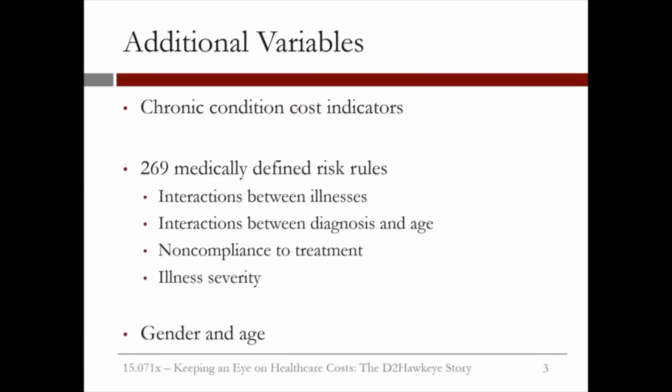In addition to the initial variables — the 217 diagnosis groups, 213 procedure groups, and 189 drug groups — we also defined, in collaboration with medical doctors, 269 medically defined rules. For example, the first type of rule indicates the interaction between various illnesses, such as obesity and depression.